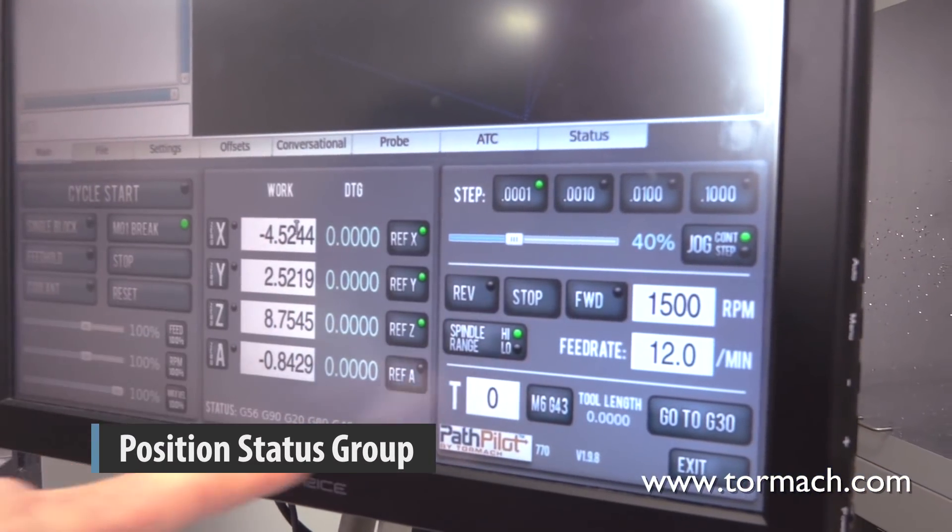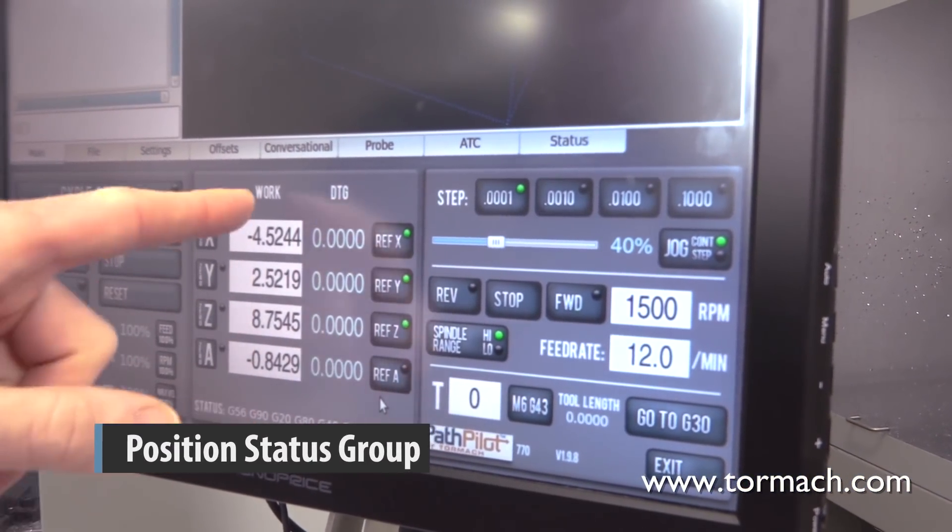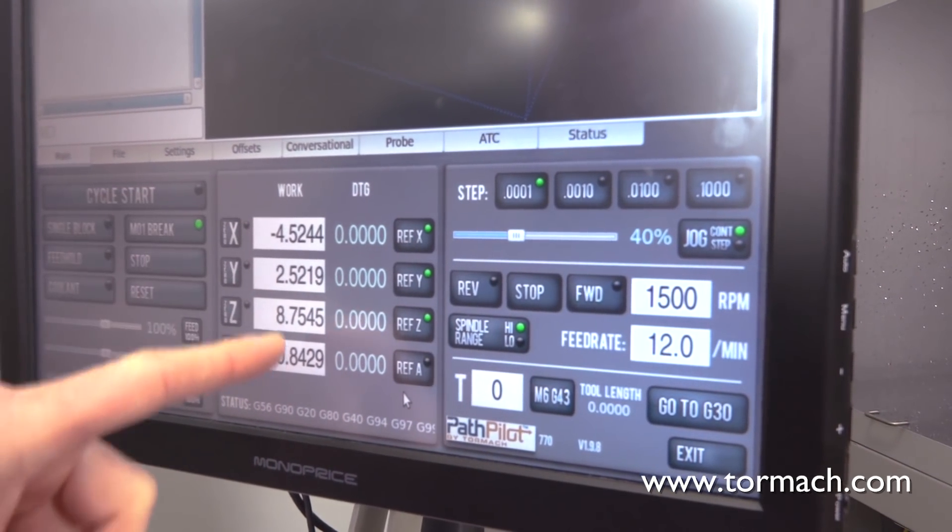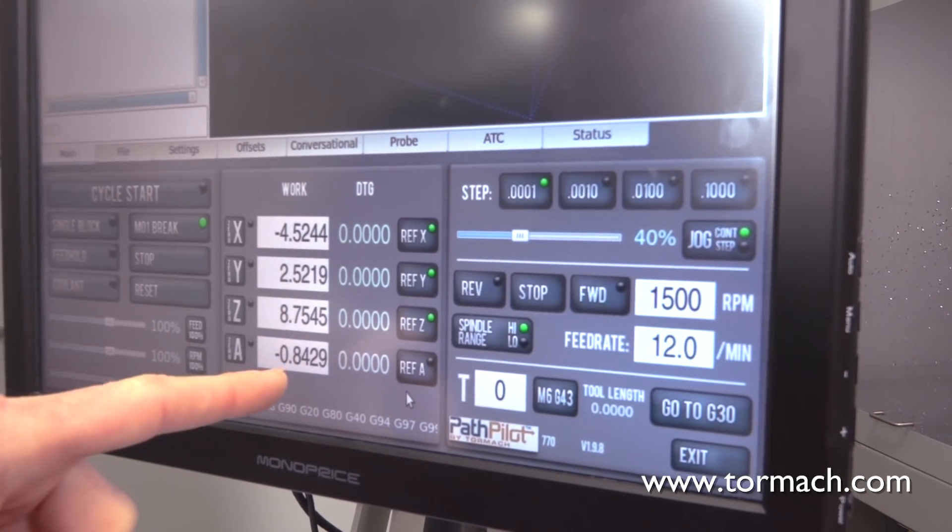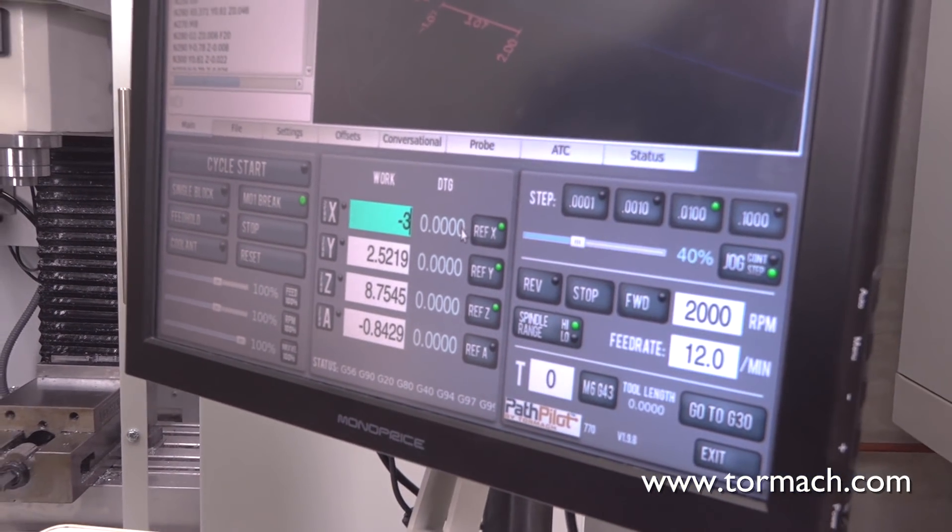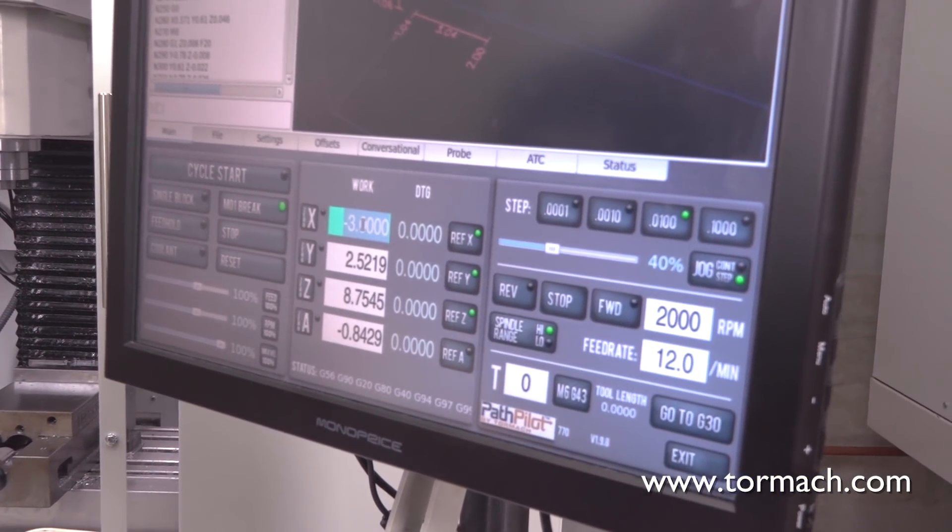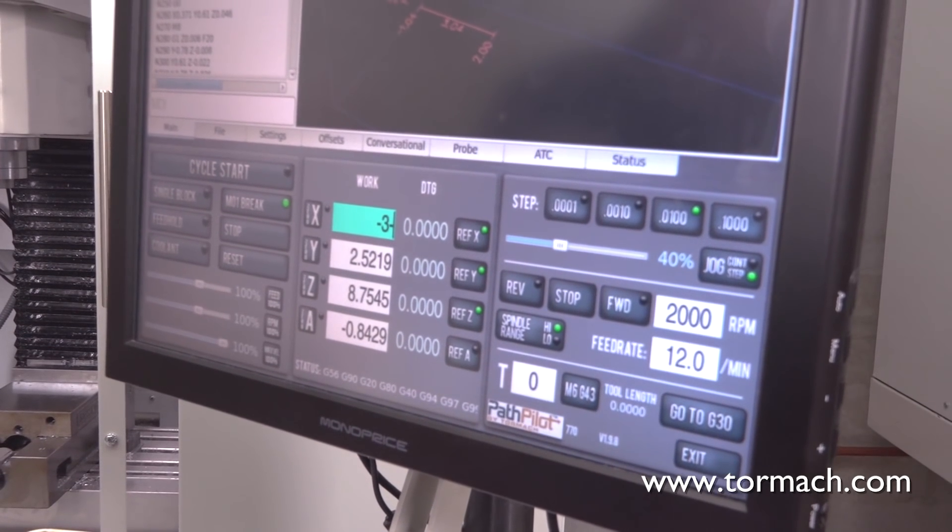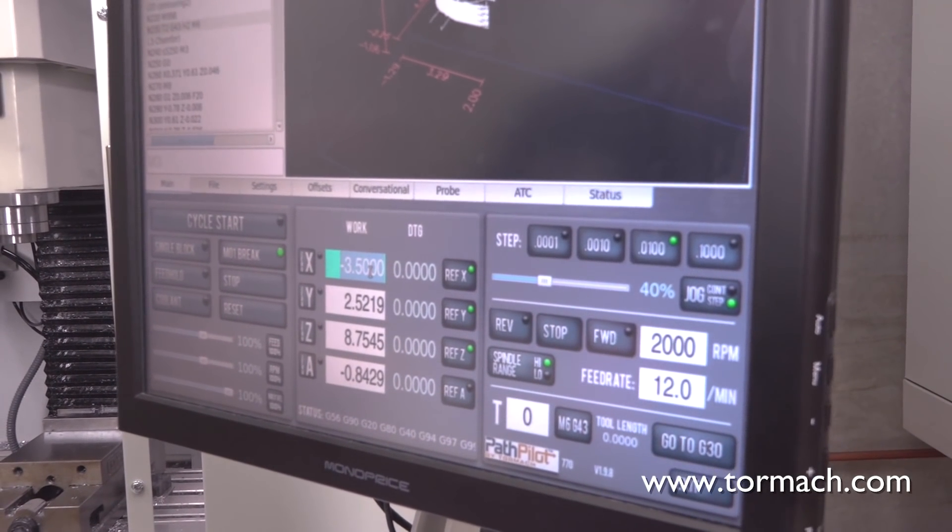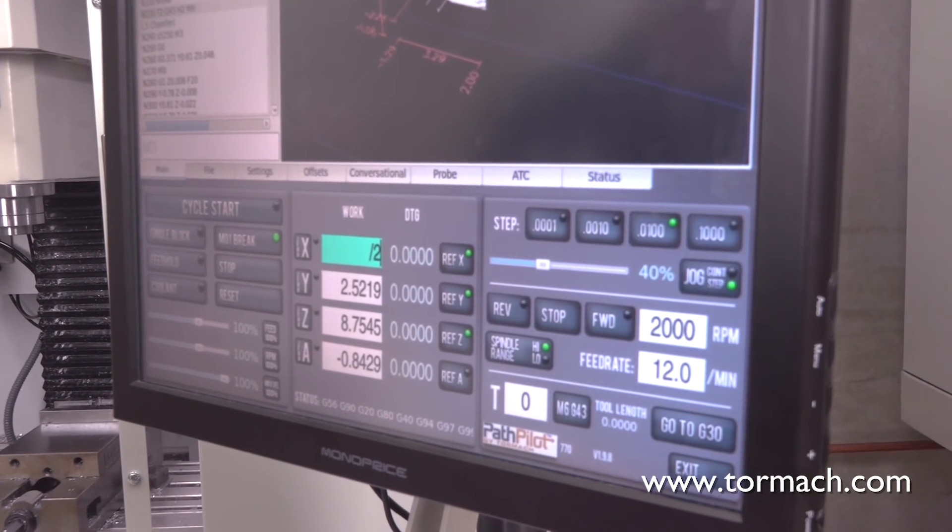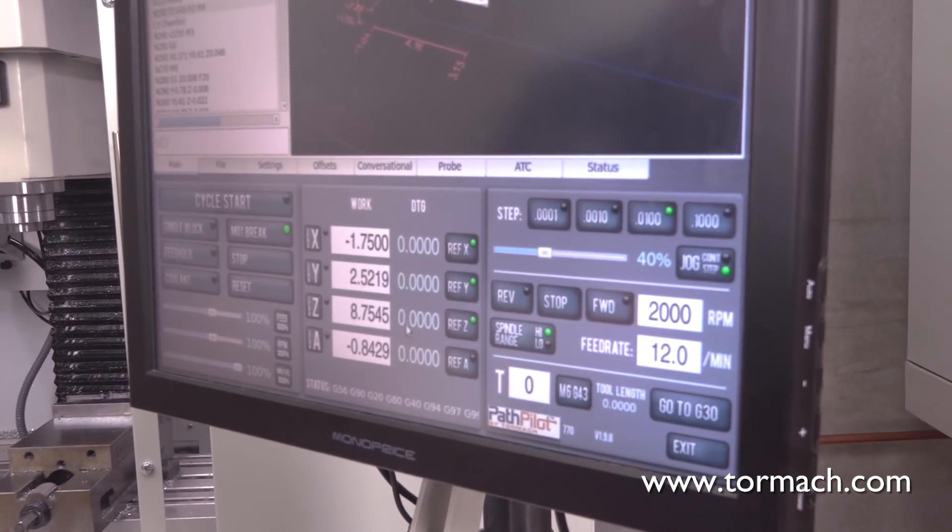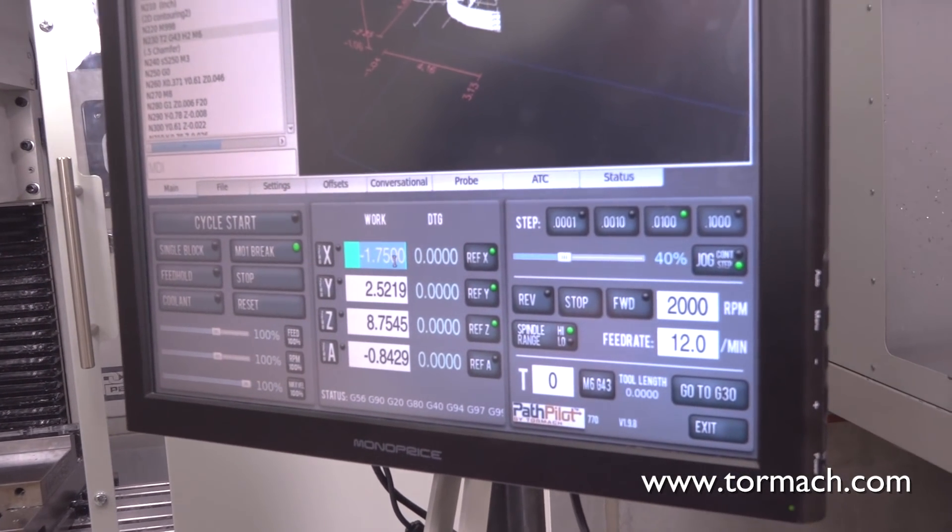This group here, we have our work offset coordinates. There's a video that you might like on work offsets. These display the machine position relative to your work coordinate zero. You can click into them, you can type a value. I can type minus three and hit enter. It also accepts math. So I can get minus three minus point five, will give me minus three point five. Or if I wanted, I could click in there and just slash two to divide that value by two. So it accepts mathematical expressions in those DROs.